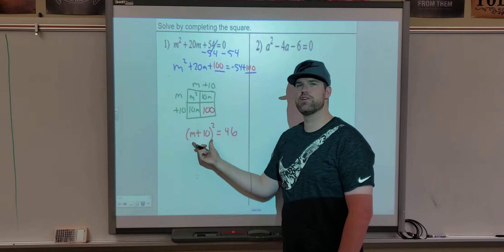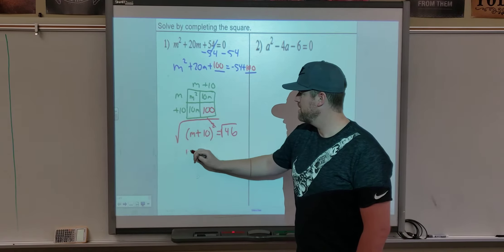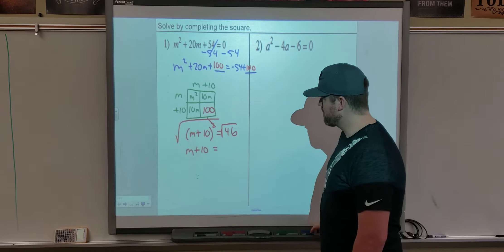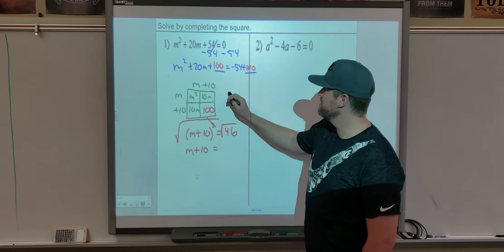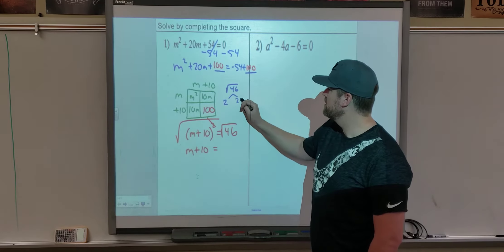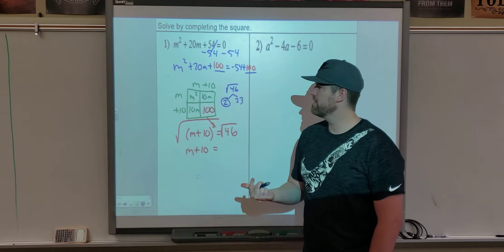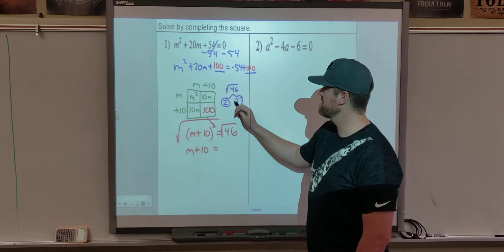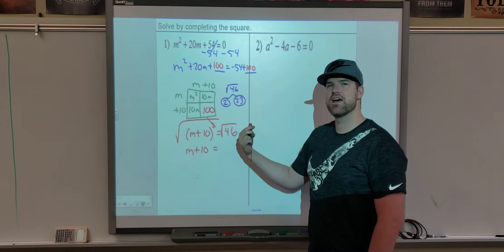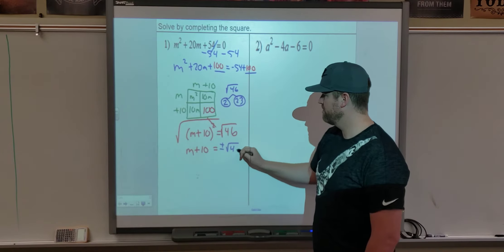Since we have a binomial squared, we know we can use the square root method. Take the square root of both sides. m plus 10 equals the square root of 46. I'm going to try the factor tree. I know I can take out a 2 because it's even. So that gives me 2 times 23. But when I try to break down 23, it's also a prime number. So there is nothing I can simplify that to. So square root of 46 cannot be simplified. We're going to leave it as plus or minus square root of 46.